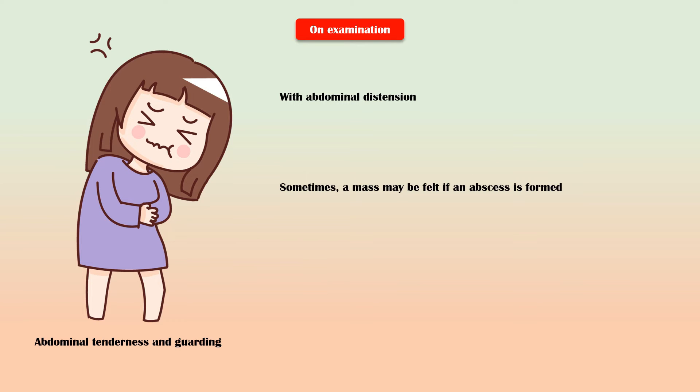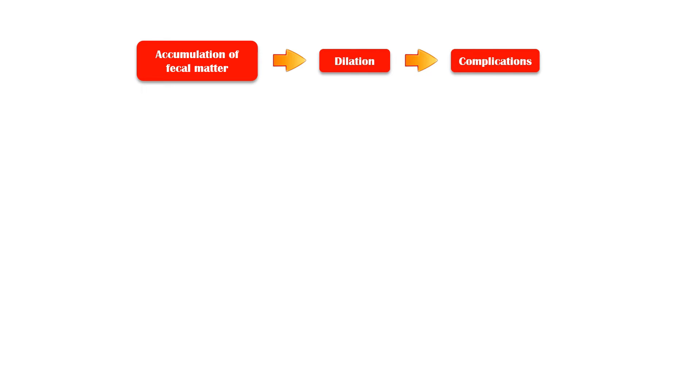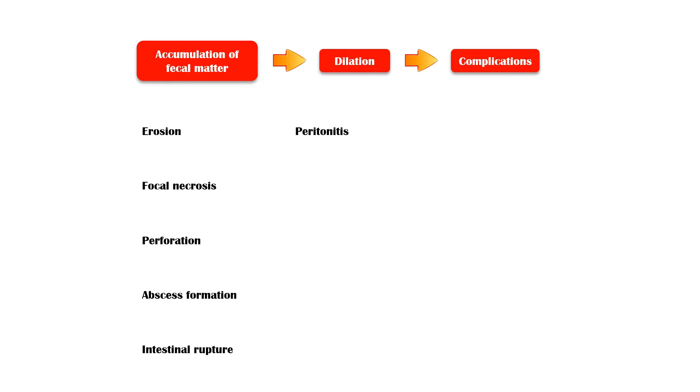With time, fecal matter starts to accumulate within the outpouchings in the colon, which can lead to dilatation and associated complications of diverticular disease. Some of these complications include erosion, focal necrosis, perforation, abscess formation, intestinal rupture, peritonitis, and fistula formation.